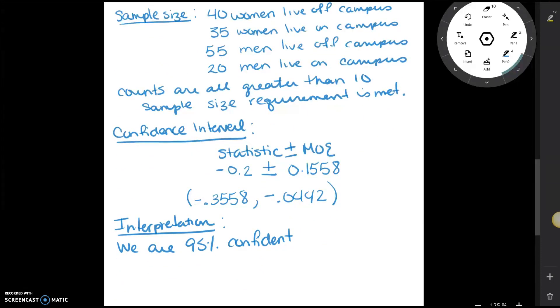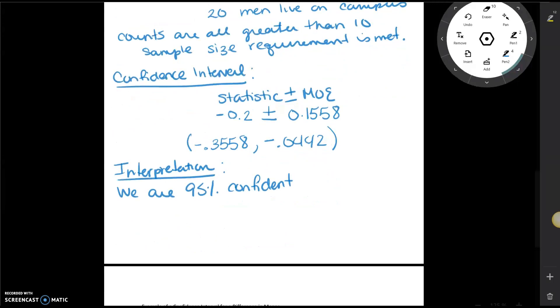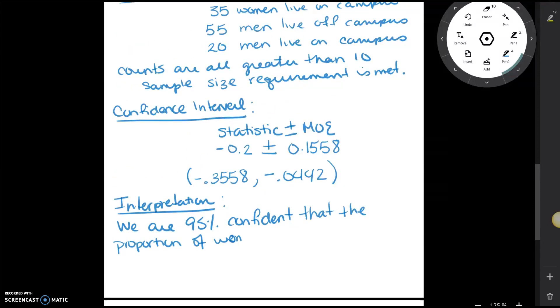...that the percentage of females who live off campus is somewhere between 0.3558 and 0.0442 less than the percentage of men. So writing that out we are 95% confident that the proportion of women who live off campus is between 0.0442 and 0.3558 less.